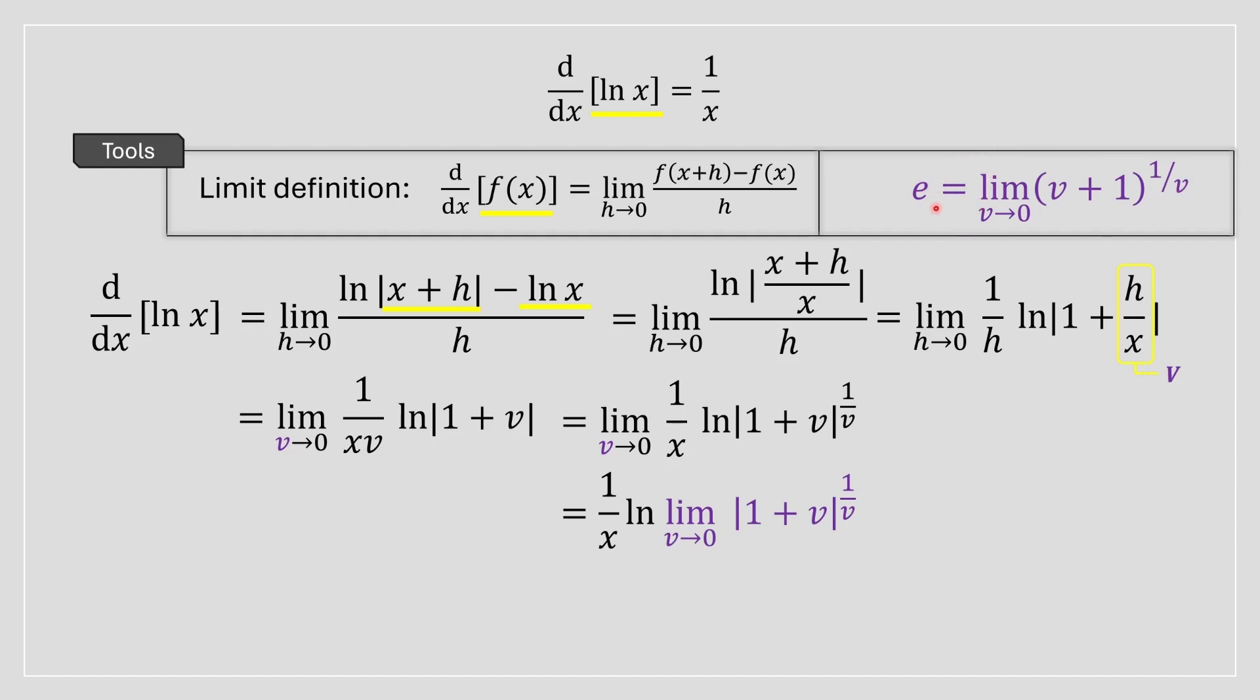And notice it resembles, it's basically the same as this limit over here. And we know that this limit represents e. So we can substitute this e where the ln is and take the ln of e, which ultimately leads you to an answer of one divided by x. And this is why the derivative of ln of x is equal to one over x.